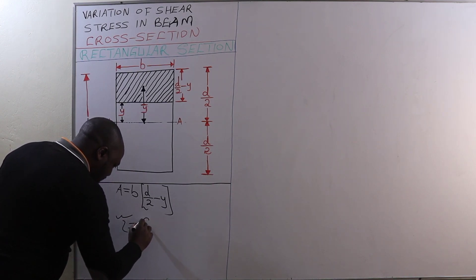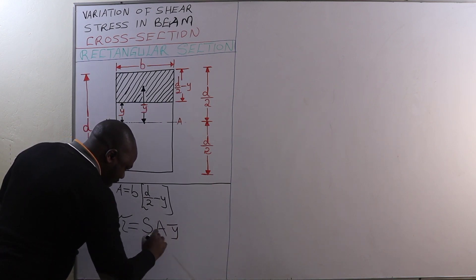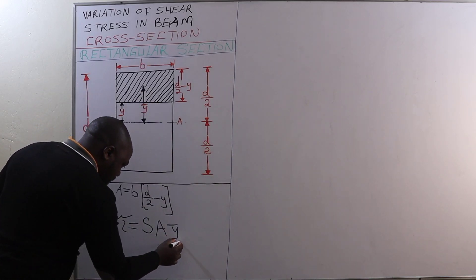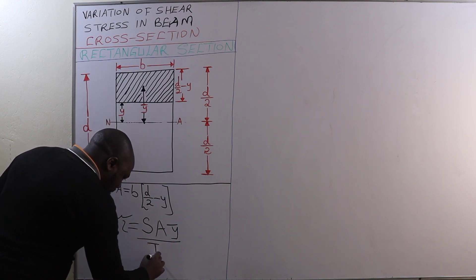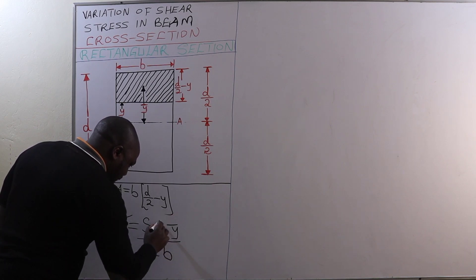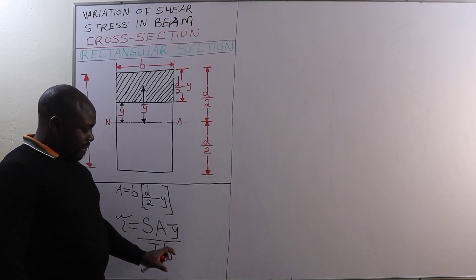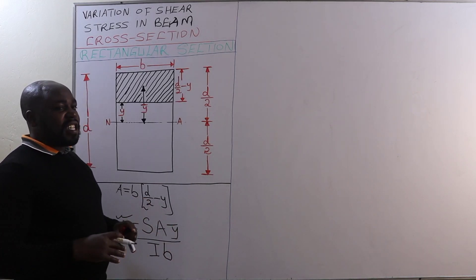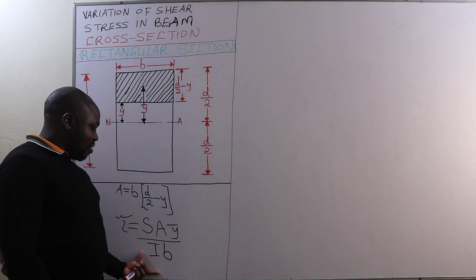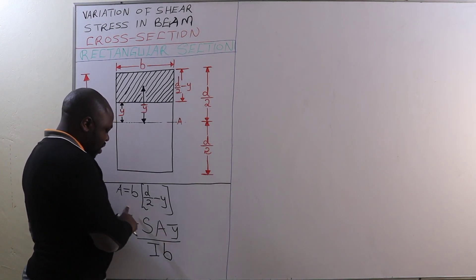Remember, shear stress is given by shear force multiplied by cross-sectional area times ȳ, where ȳ is the distance from the neutral axis to the center of gravity of the shaded region, divided by the moment of inertia of the beam section multiplied by the breadth of the beam. This is the general shear stress equation, and we now have the cross-sectional area.